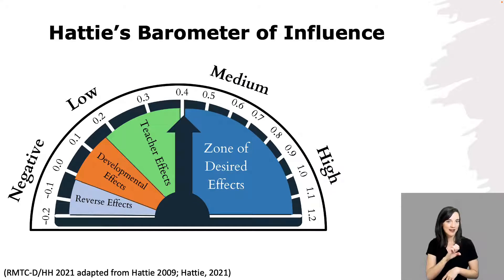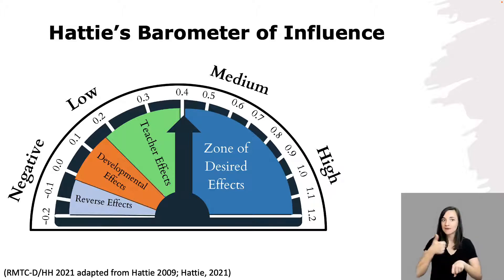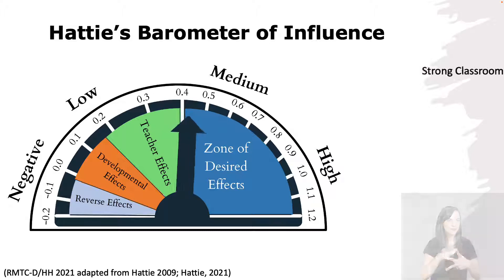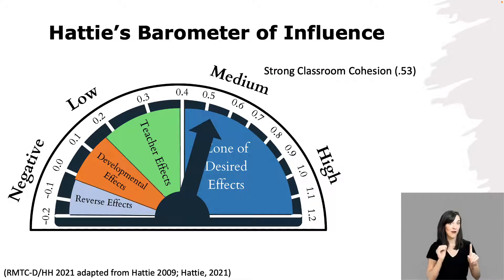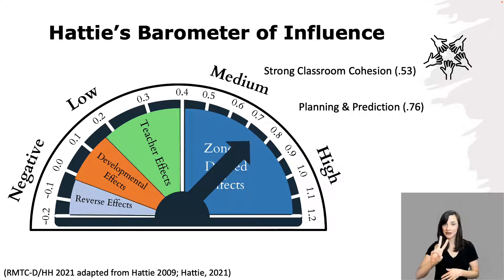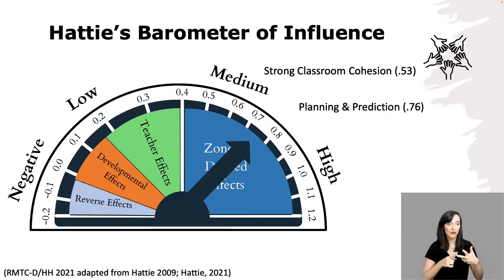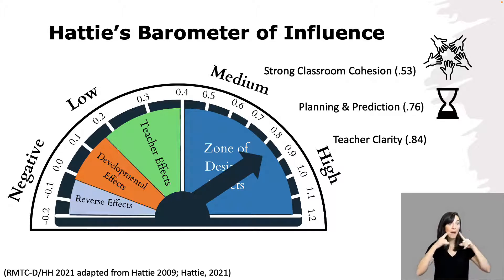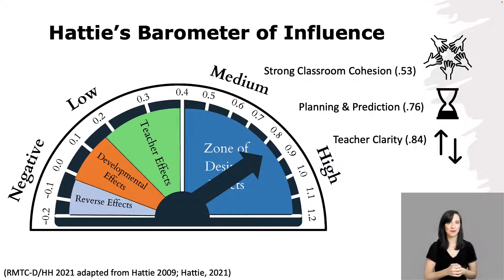A few examples of research according to Hattie's Barometer of Influence that supports establishing a consistent, organized, and respectful learning environment are: Strong classroom cohesion at an effect size of 0.53 — this is the sense that the teacher and students are working together toward positive learning goals. Planning and Prediction at 0.76 — this is an explicit focus on planning and the use of time. And teacher clarity at 0.84, which relates to organization, explanation, examples, and guided practice and assessment of student learning.